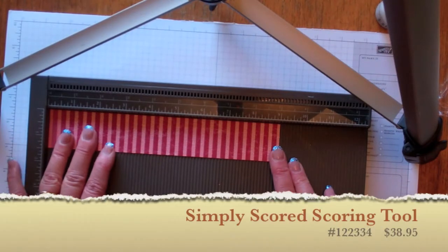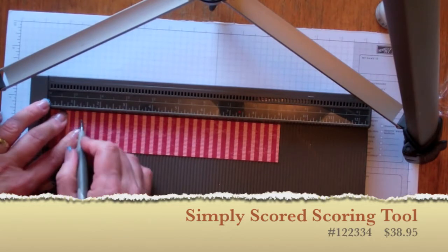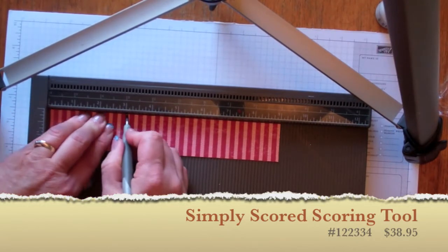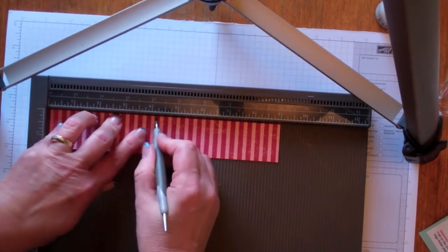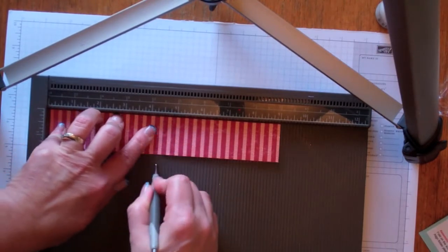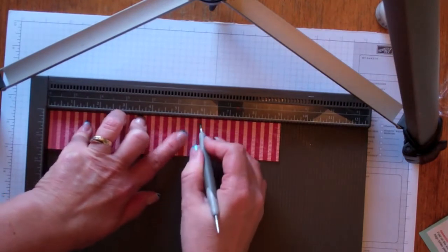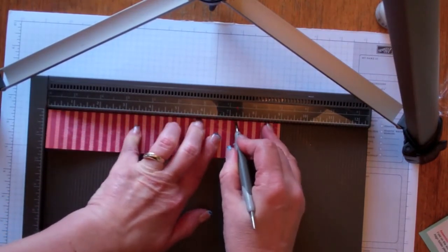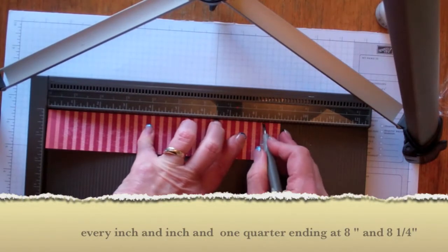So we're going to start with one, one and a quarter, two, two and a quarter, three, three and a quarter, four, four and a quarter, five, five and a quarter, six and you can see I'm just going along until I get to eight and eight and a quarter.